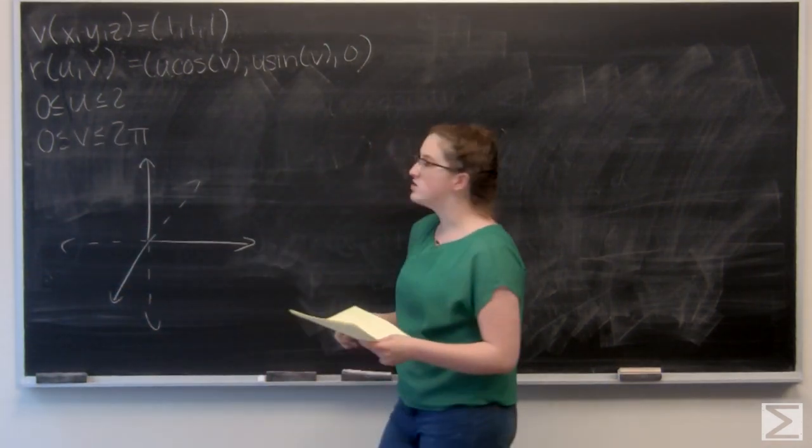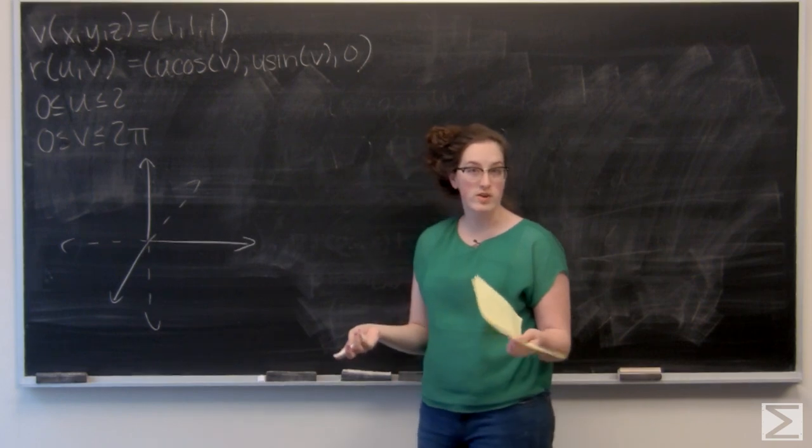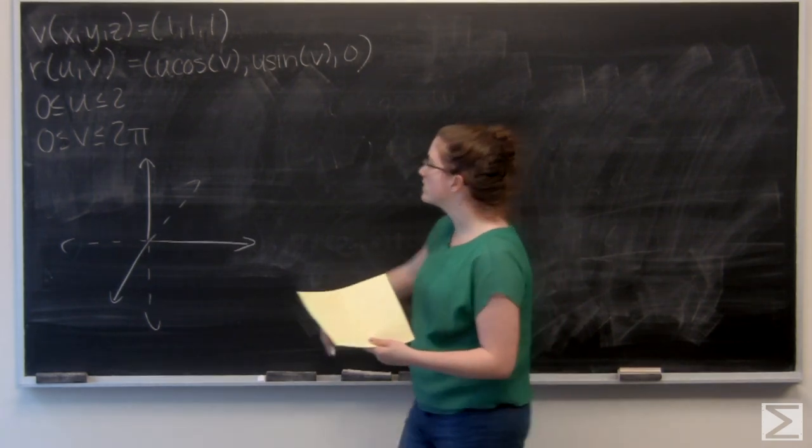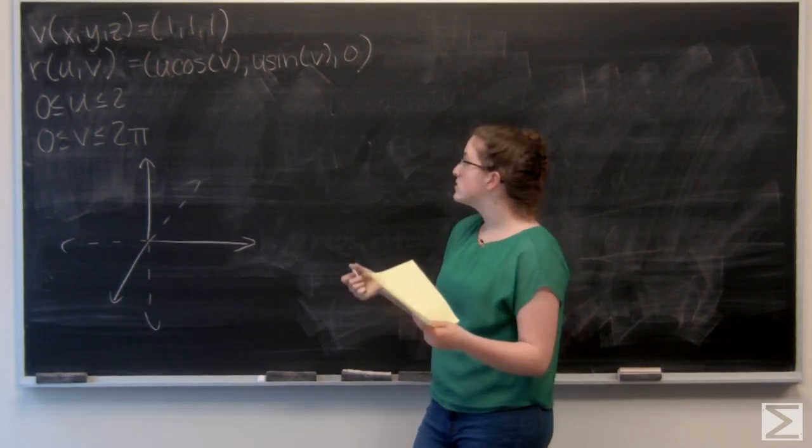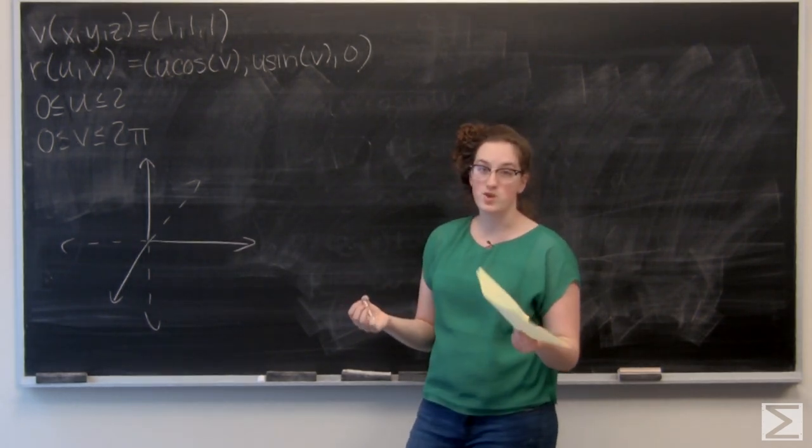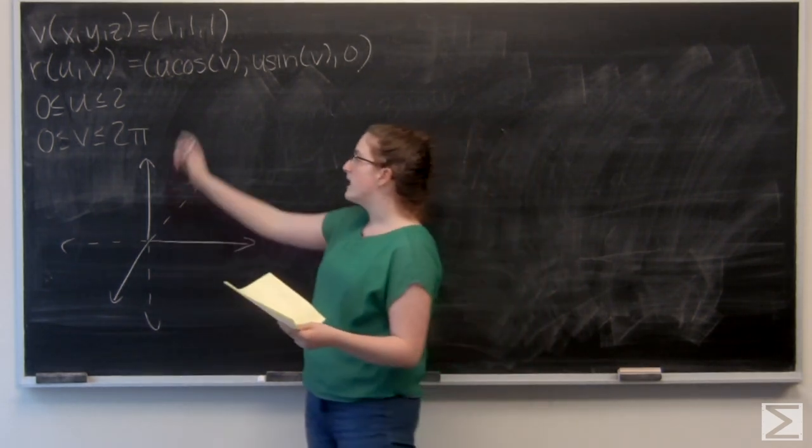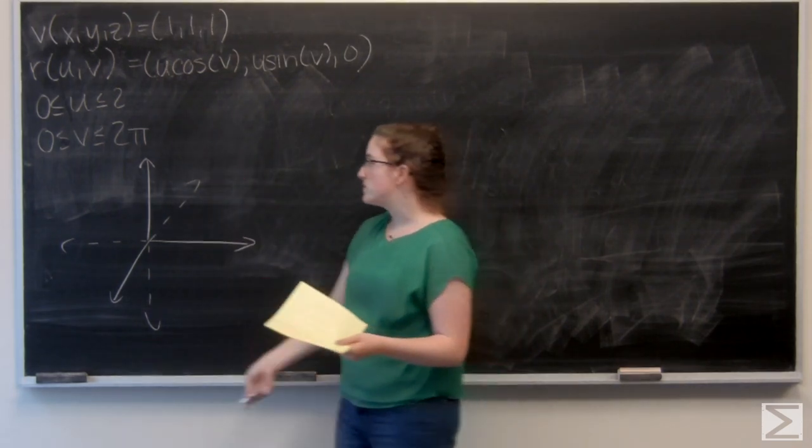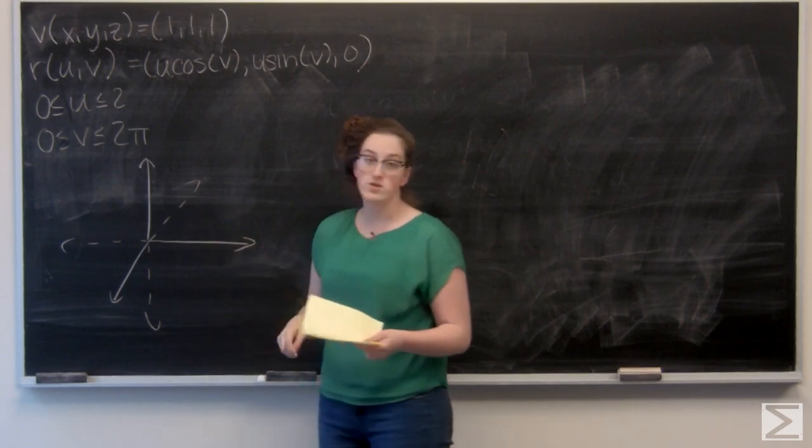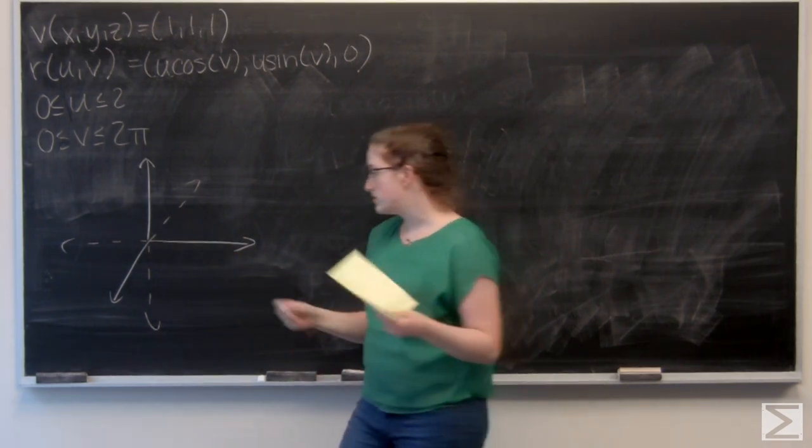And u cosine v and u sine v probably look familiar. They would look more familiar if I thought of u as r and v as theta. So I'm looking at a circle of radius u in the x-y plane. And I'm given that u goes between 0 and 2, so I've got a circle of radius 2. Since v goes from 0 to 2 pi, I've got a full circle. So I'm just going to draw that in.